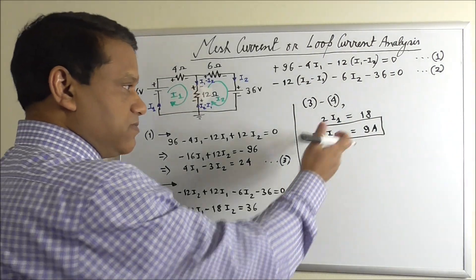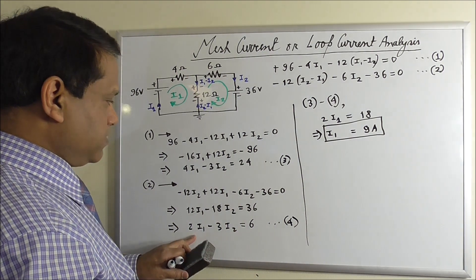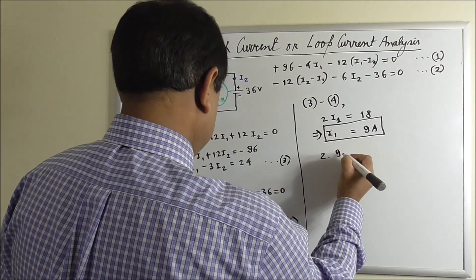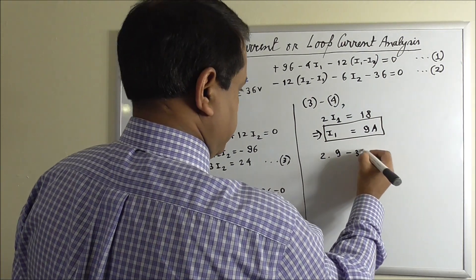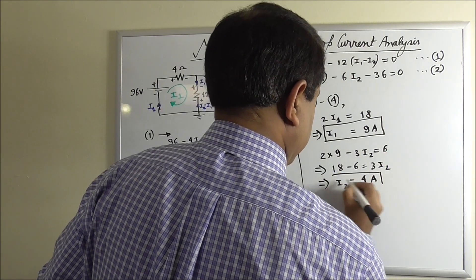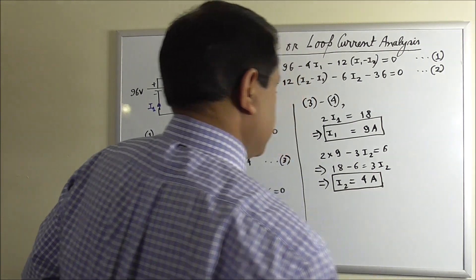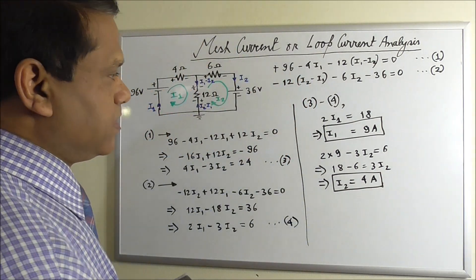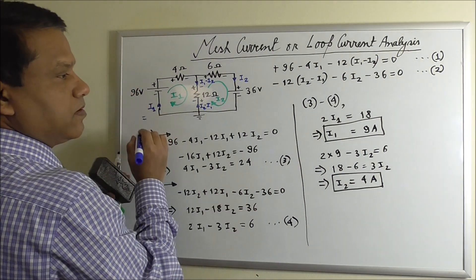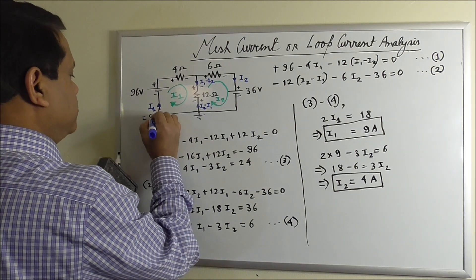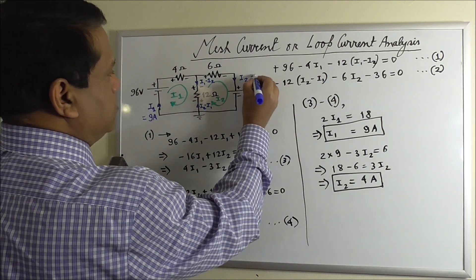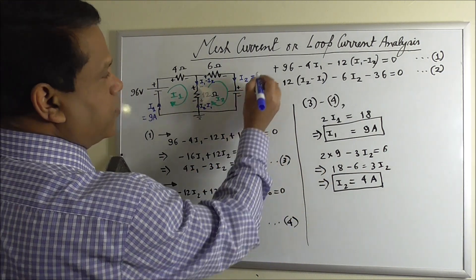Now we can use this value in equation 3 or 4 to get I2. Let's use it in equation 2. It will be 2 times 9. So I2 is equal to 4 ampere. So we have solved the circuit. We have found the current I1 is equal to 9 ampere and I2 is equal to 4 ampere.